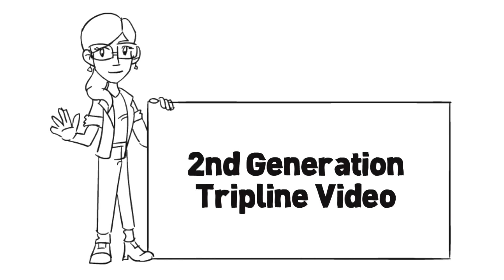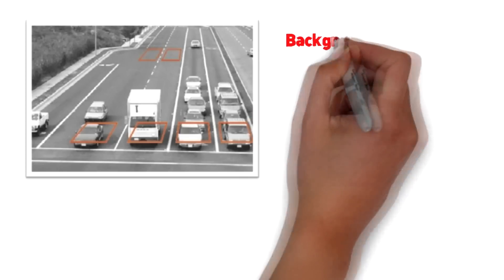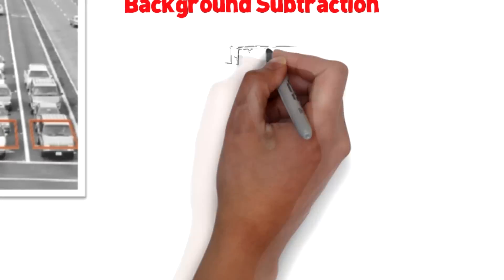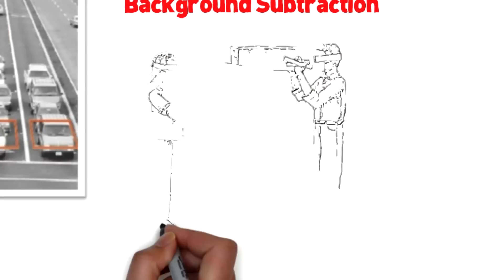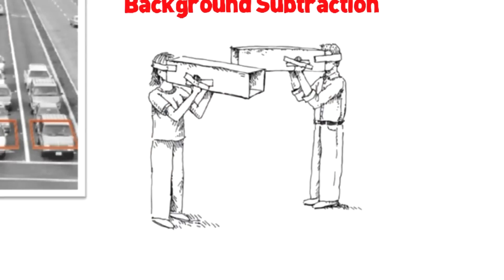Second Generation: Tripline Video. Tripline Video, around since the 90s, works through background subtraction. More simply put, it works by detecting something in a box from a narrow view, like with these guys.